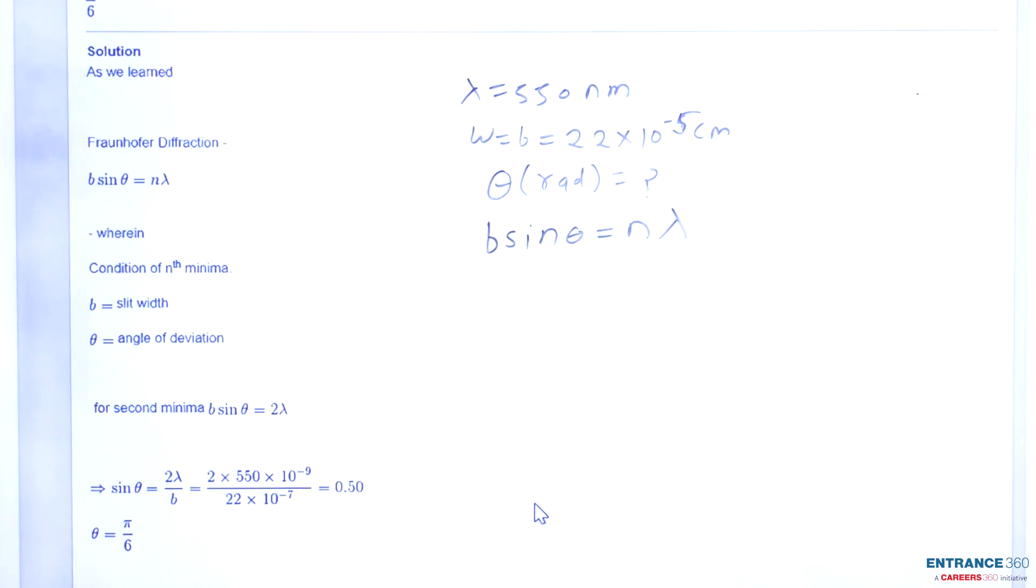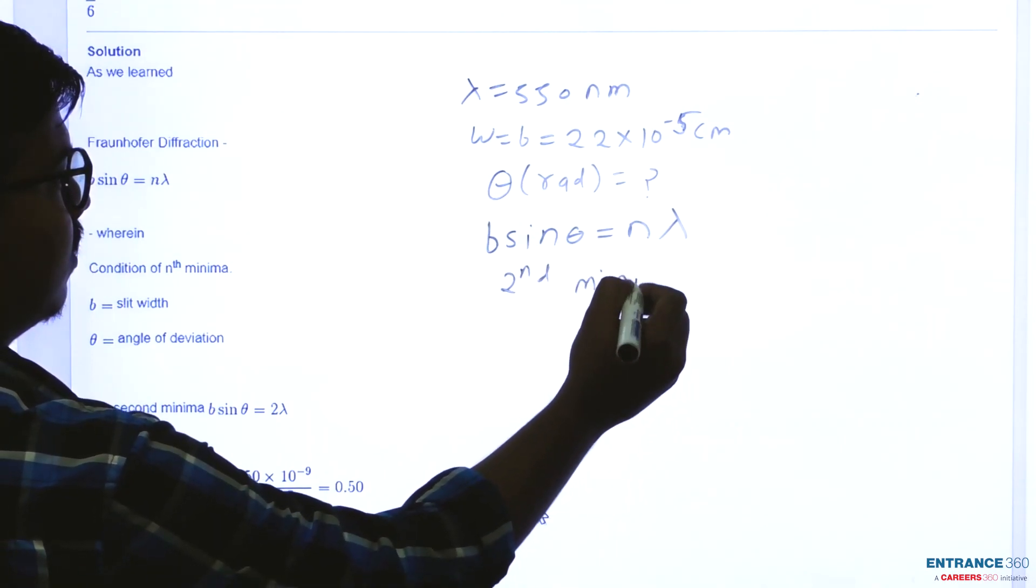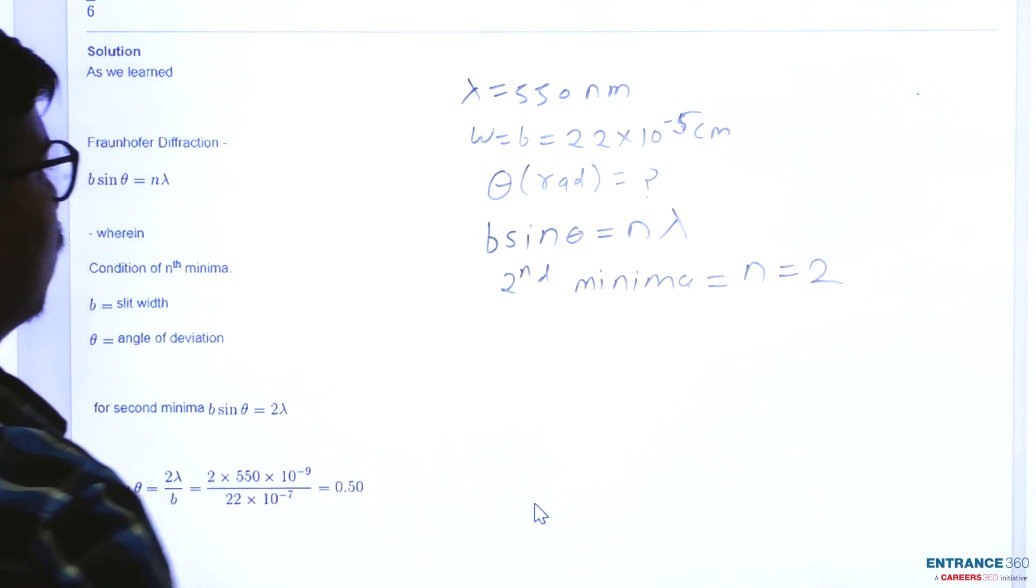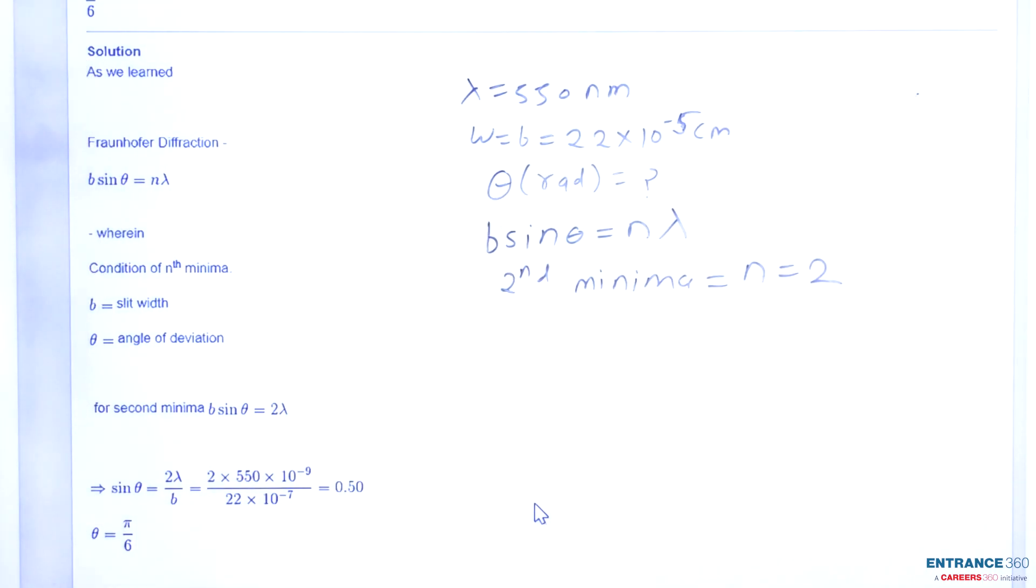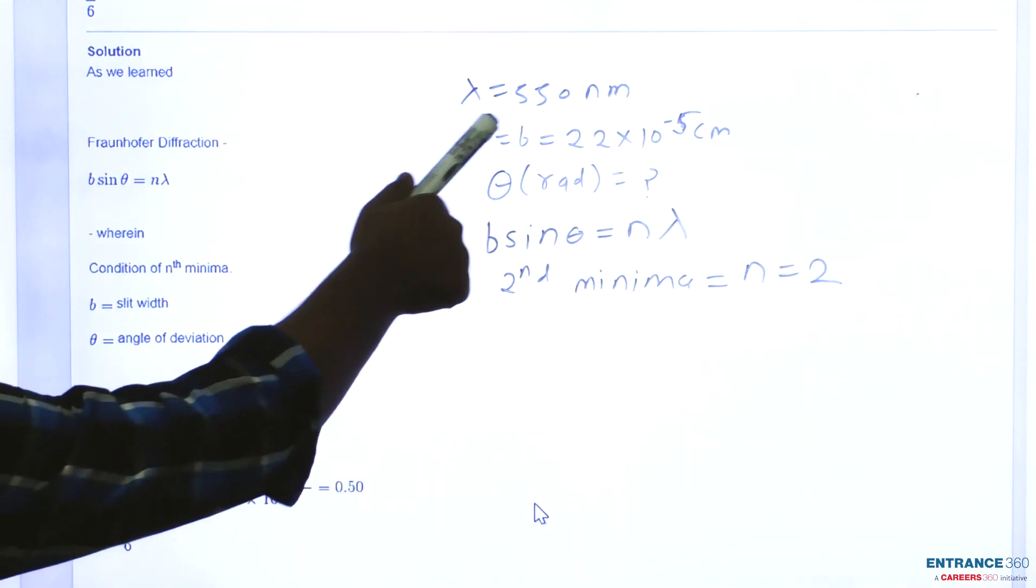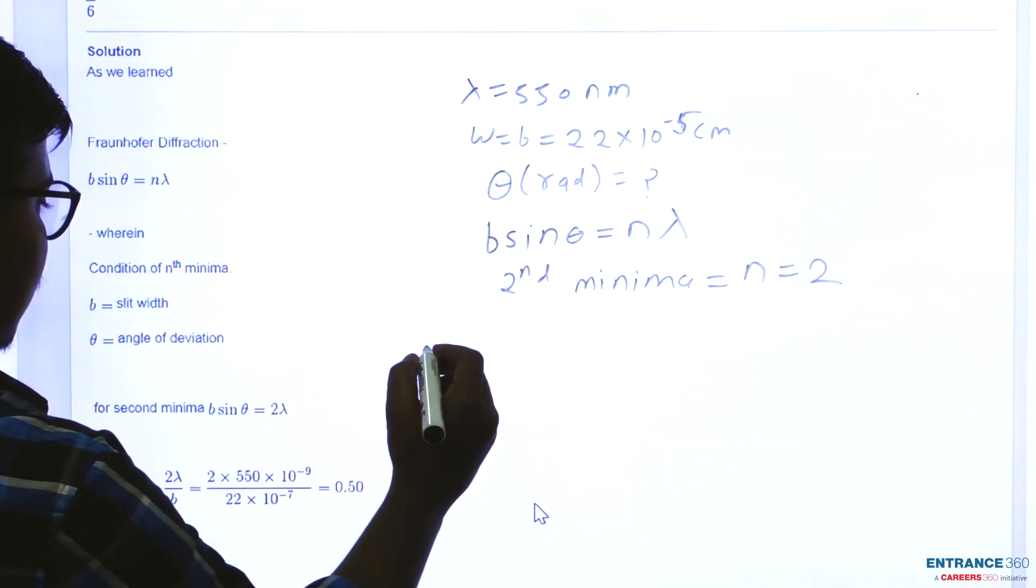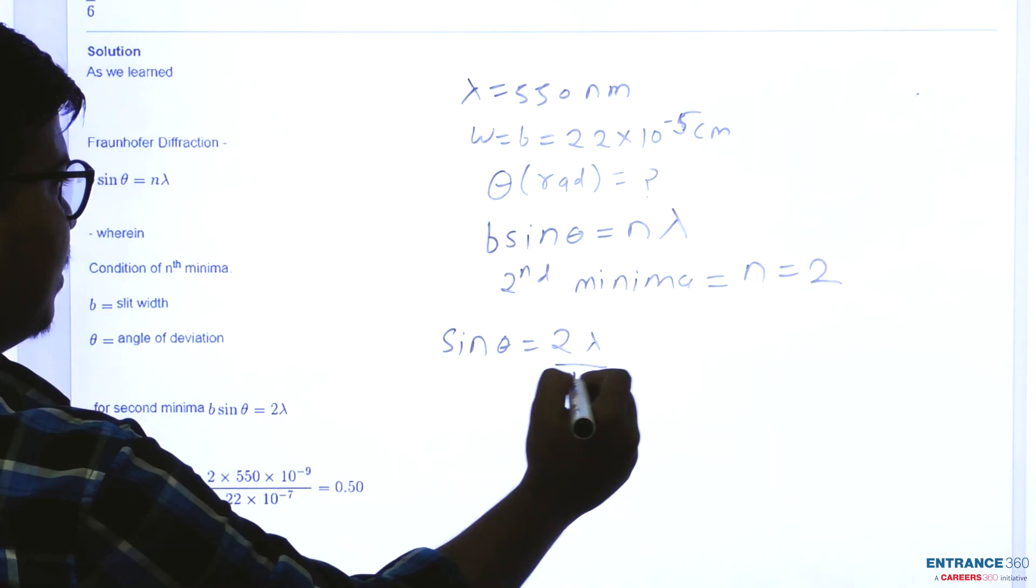In this question we are dealing with second minima, so the value of n equals 2. The values of B and lambda are also given. We put these known quantities in the formula, so we get sin theta equals 2 lambda by B.